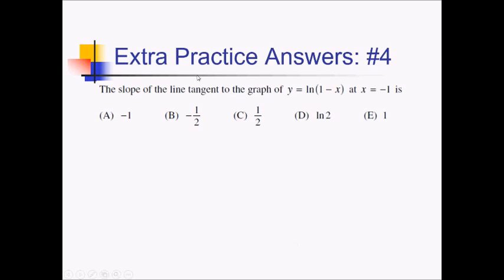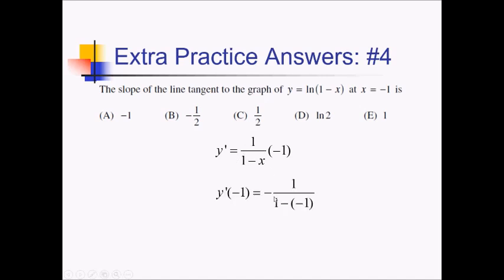For this problem, we want the slope of the line tangent to ln of 1 minus x at x equals negative 1. Let's first take the derivative. Derivative of ln of something is 1 over the something — 1 over 1 minus x. But now we have to take the derivative of the something. The derivative of 1 minus x is negative 1. So we have a tail of negative 1. Then plugging x equals negative 1 in, we get negative 1 over 1 minus negative 1, which is negative 1 over 2, or negative one half — answer choice B.